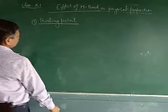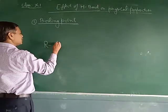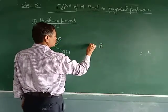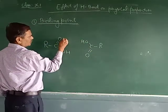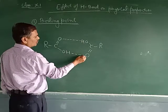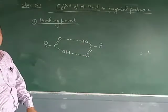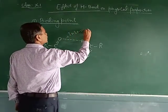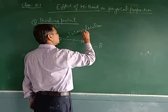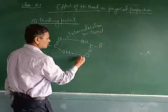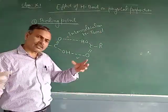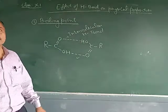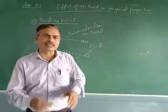Like the boiling point of carboxylic acid (R-C-O-H): there is hydrogen bonding between two molecules of carboxylic acid — this is intermolecular hydrogen bonding, also called associated molecules. Due to this association, the boiling point of carboxylic acid is much higher than that of alcohols.